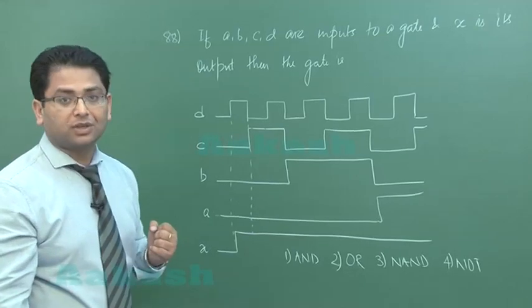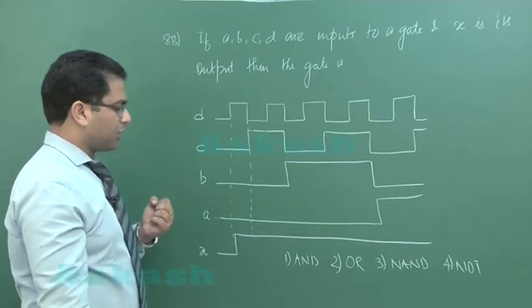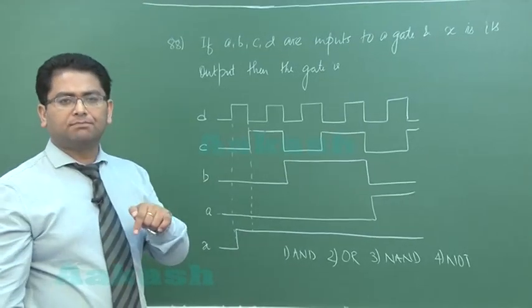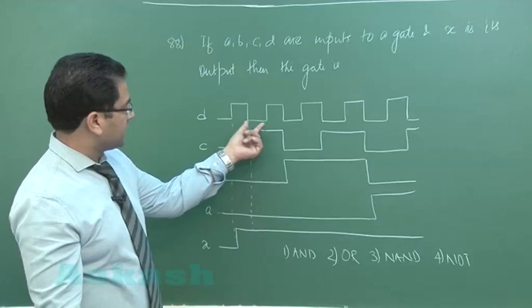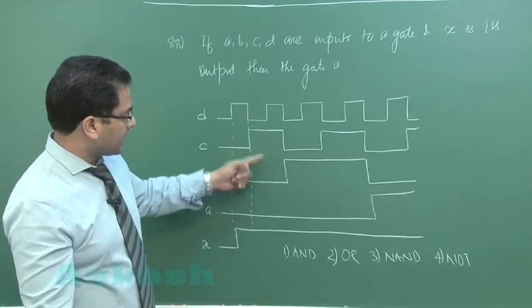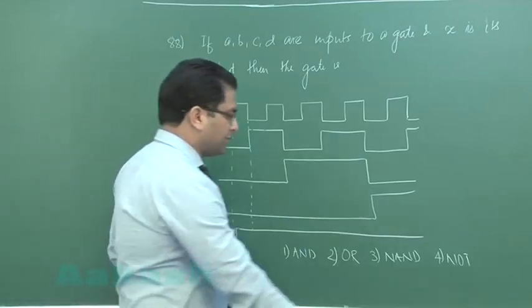It can't be AND, because the property of AND is if any of the inputs is low, the output would be low. While here you can see this is low and this is high, low, low, but the output is high. So it can't be AND. It can't be NOT at all.